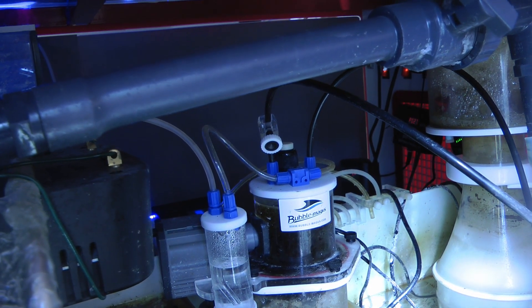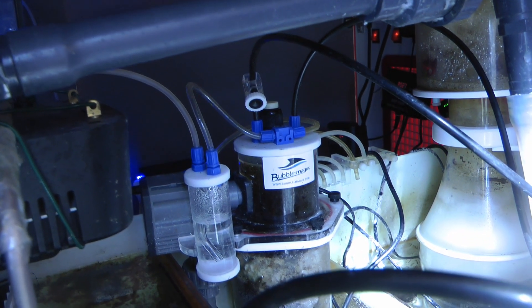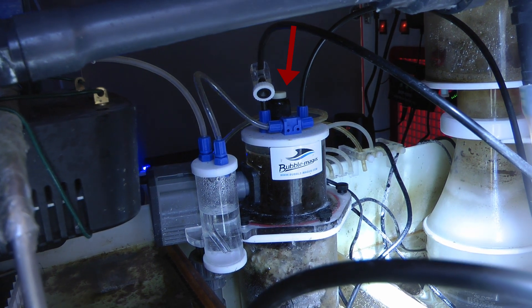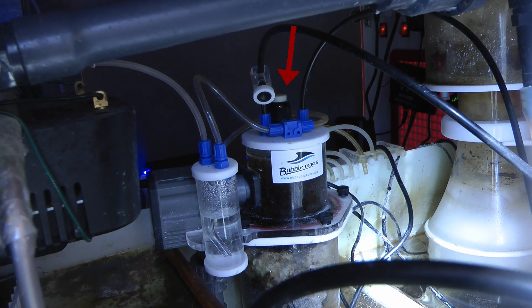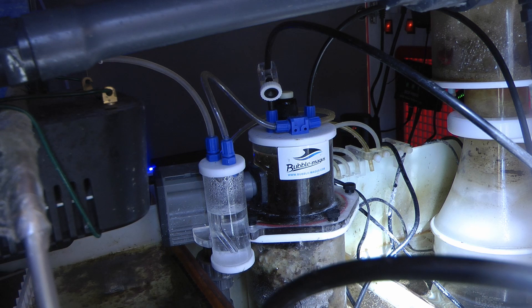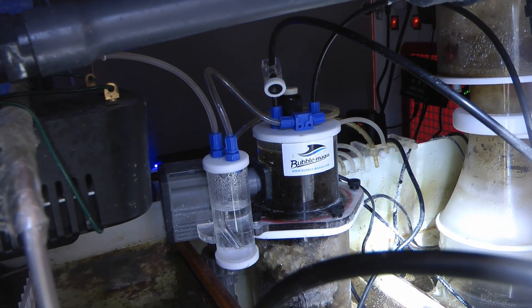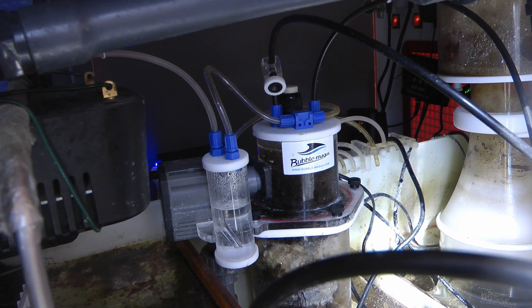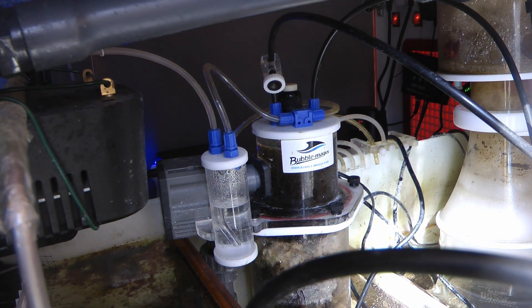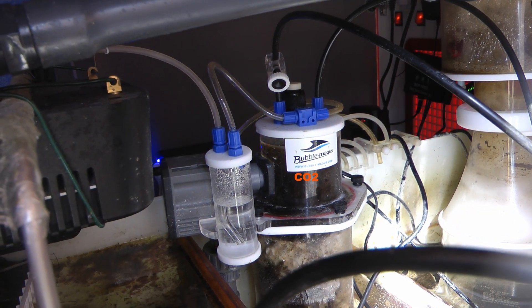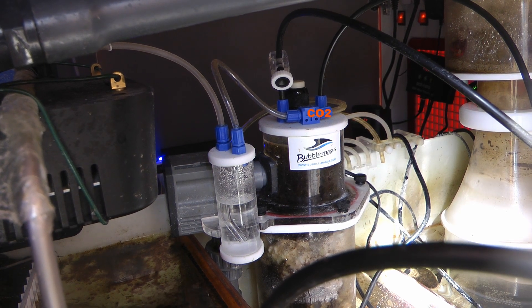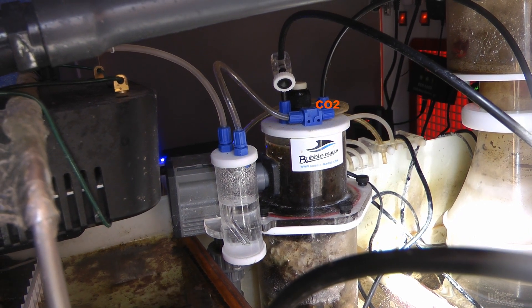This is a Bubble Magus calcium reactor. Although it has a port to connect the pH probe, I'm not using it. This reactor recirculates the CO2, and maybe this is the reason why this simple setup works with such high flow through the reactor. The CO2 that is undissolved collects at the top, and is injected back into the circulation pump.